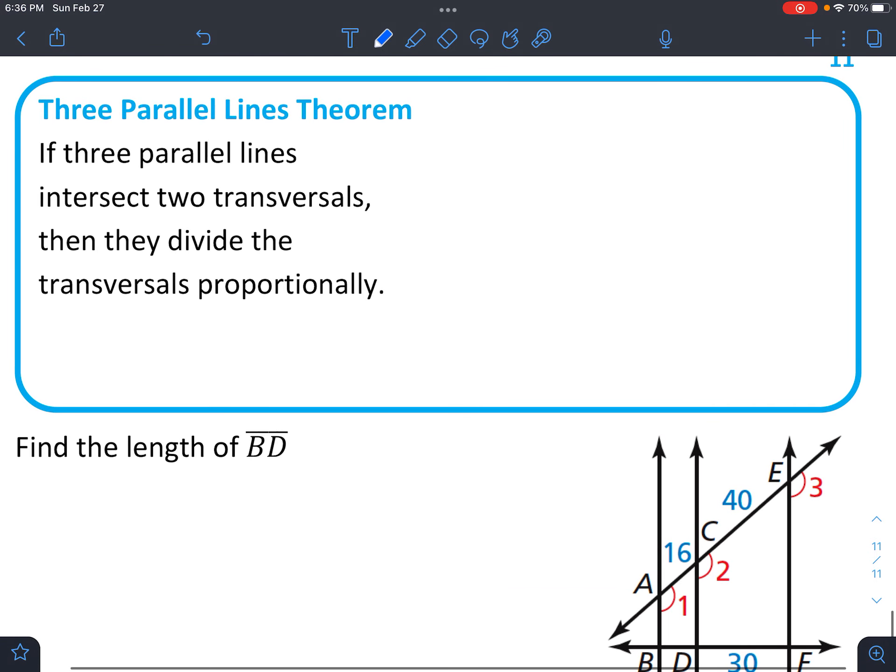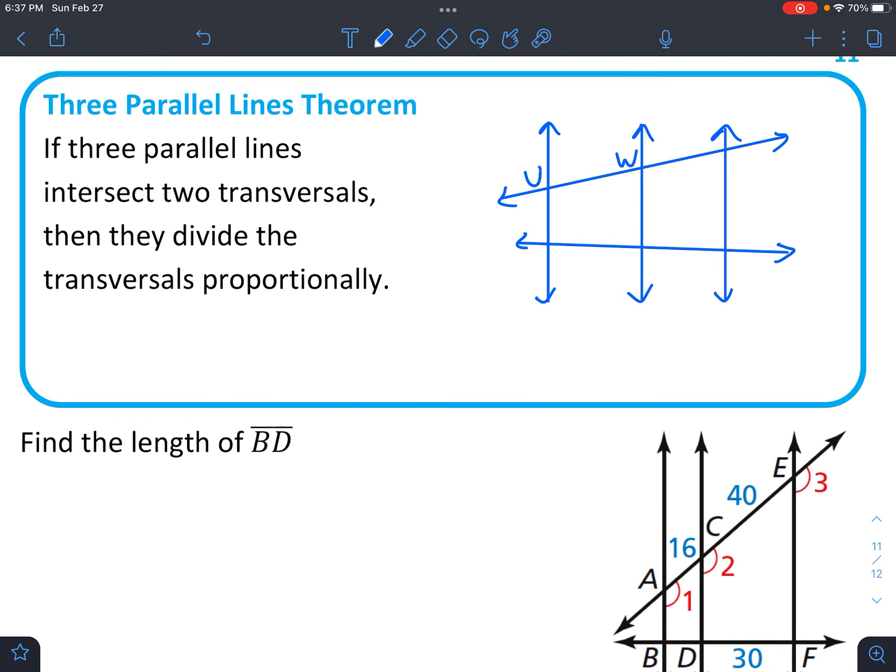All right, let's look at the next one. So what these all have in common is that pretty much all of them represent relationships that are proportional. And so just how you set up the proportions is just a little bit different with each one. So this one has three parallel lines. And then there's two transversals going through like this,